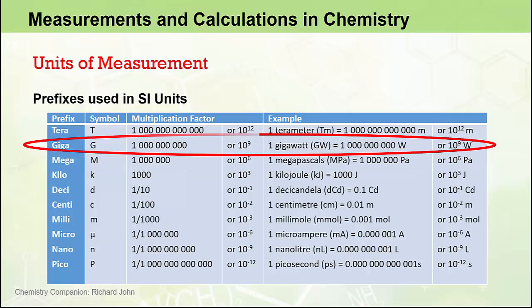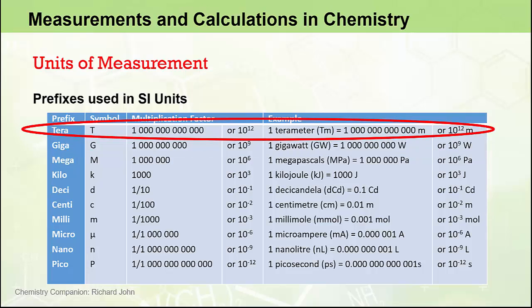Giga, capital G, meaning a billion times. And terra, capital T, meaning a multiplier of a trillion.